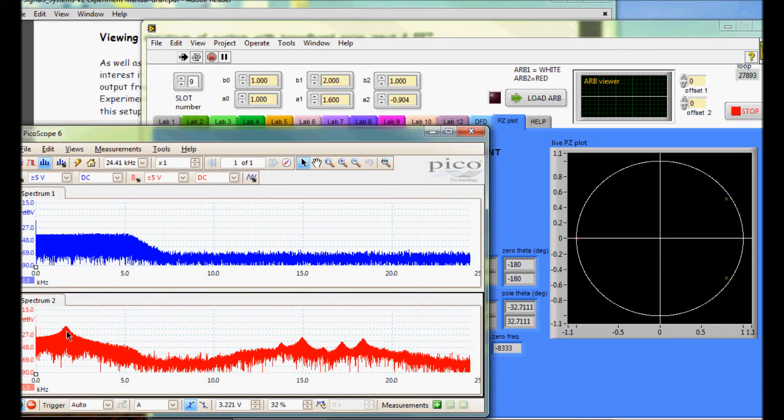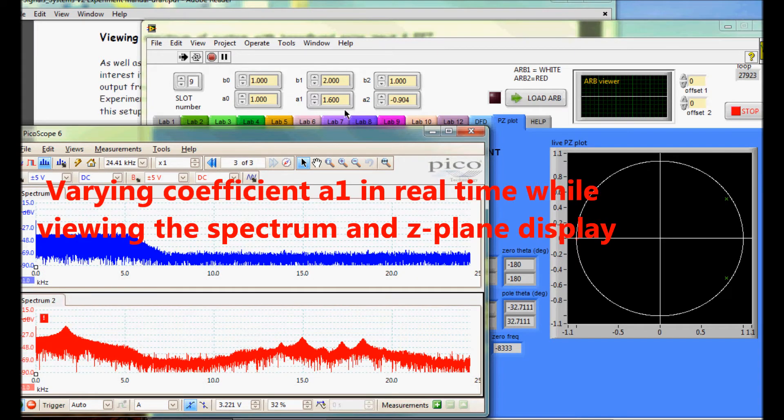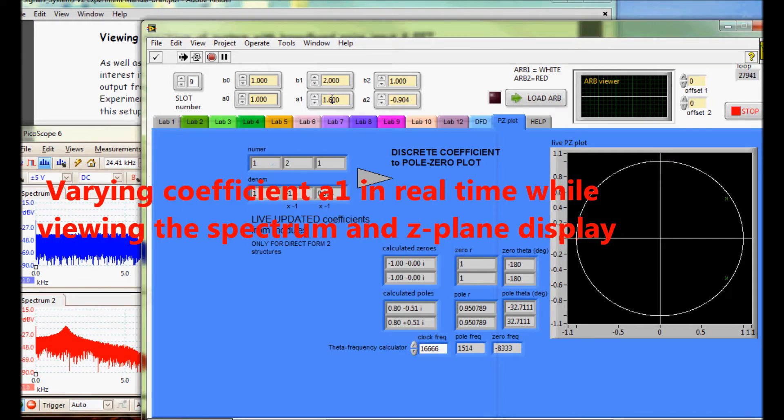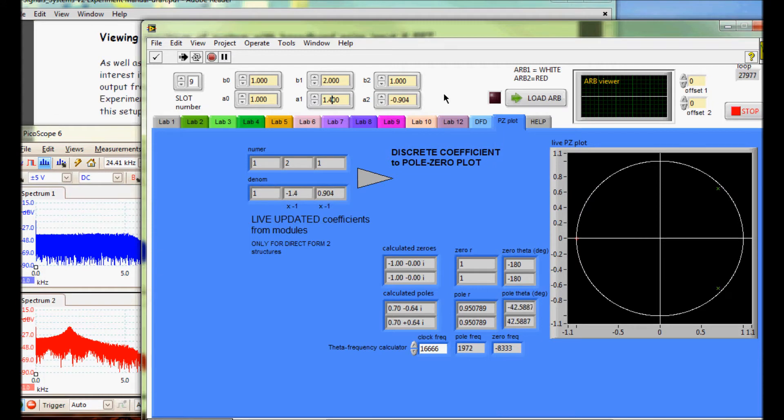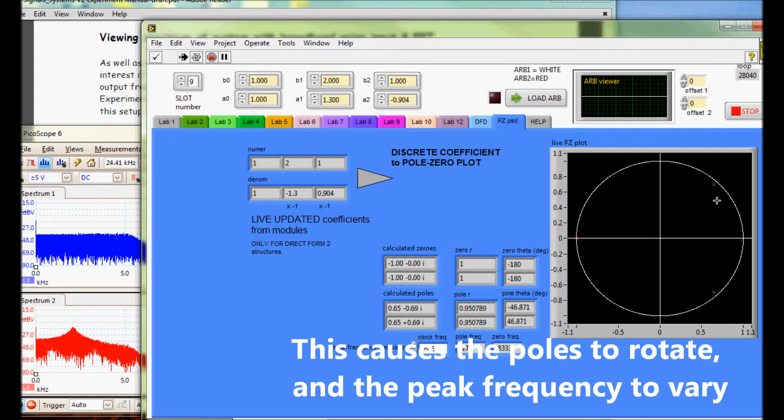We can go in and adjust the coefficient values of the structure in real time, and by doing so we move the position of the poles or the zeros depending on what you wish to study. This reinforces the understanding of the relationship between the polynomial and the implementation.